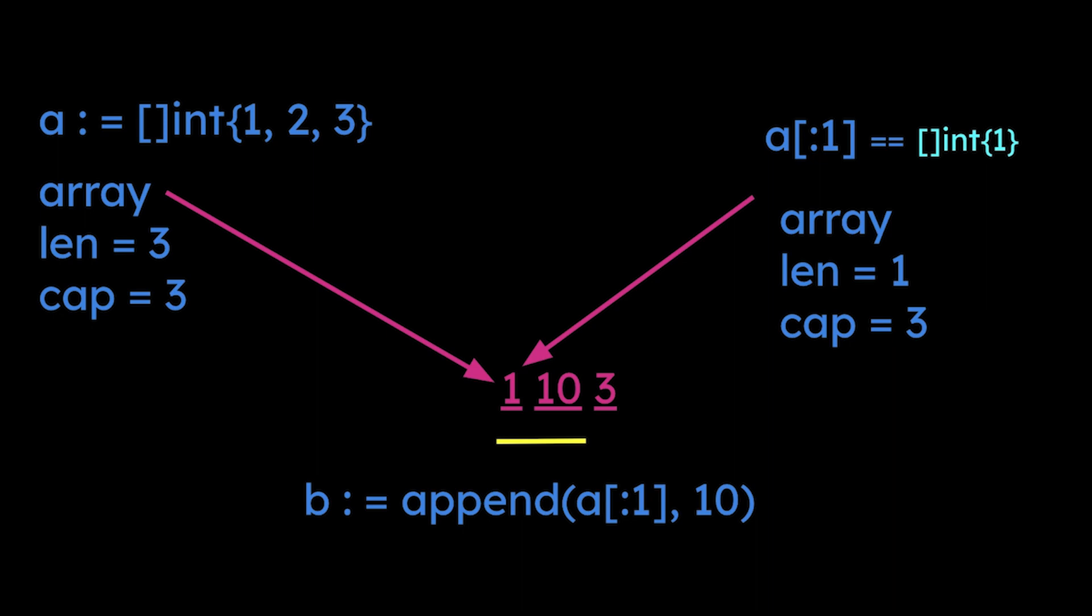To the slice, it just gained a new number. For the underlying array, it just changed the second value of that array from two to 10. It does that without regard to the fact that there's an entirely other slice pointing to the same value.